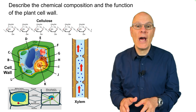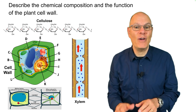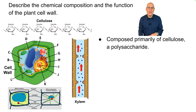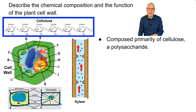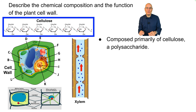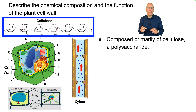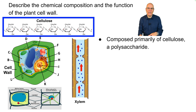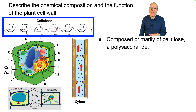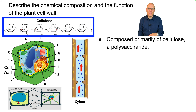The cell wall is composed primarily of cellulose, which is a polysaccharide — the one that we can't digest, but which ruminants like cows and goats can digest because they have symbiotic relationships that enable them to break it down and release food energy.